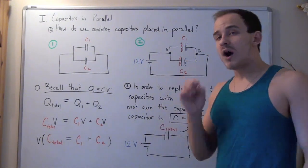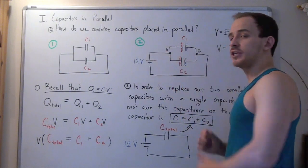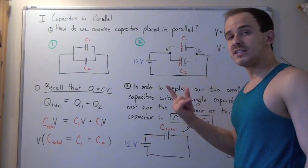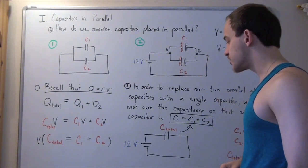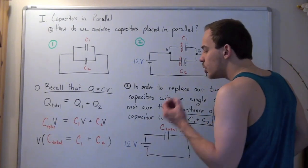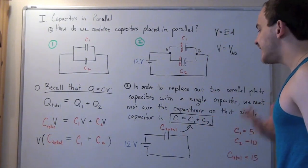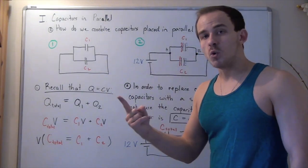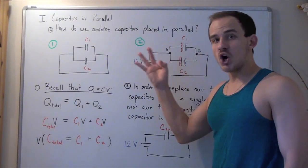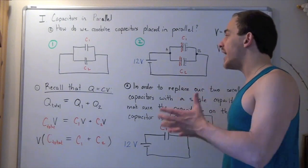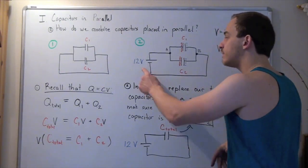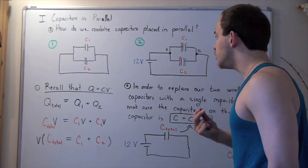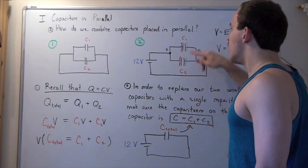Why is it useful to convert a circuit with two parallel capacitors C1 and C2 into a circuit with one equivalent capacitor? It is useful because now, knowing the voltage and the capacitance, I can find the charge that flows in the circuit — I have two knowns and one unknown. In the original circuit with two separate capacitors, I would have three unknowns — Q1, Q2, and voltage — and only two equations, making it impossible to solve directly.